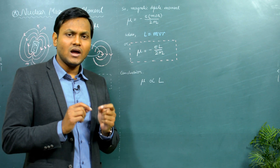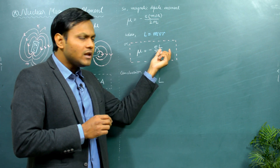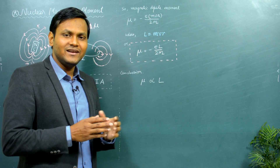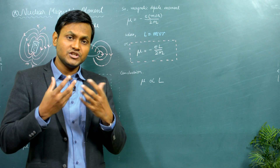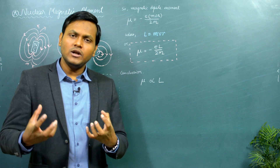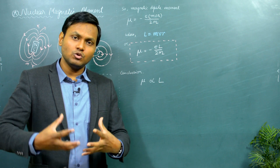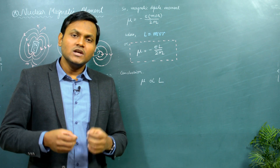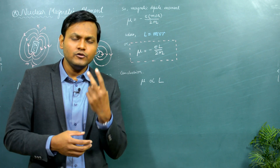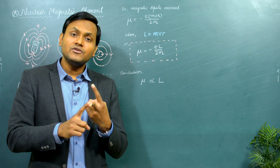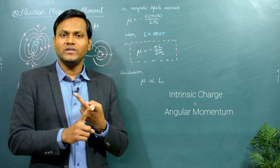E and m here are constants, and two is a number. The only two variables are L and μ, so the angular momentum L is associated with the magnetic moment. Whenever there is a particle which has a charge of its own and an angular momentum associated with its motion, that particle also has a magnetic moment associated with it. So the magnetic moment of any particle is essentially a result of two things: first, the intrinsic charge that the particle has, and second, the angular momentum associated with its motion.